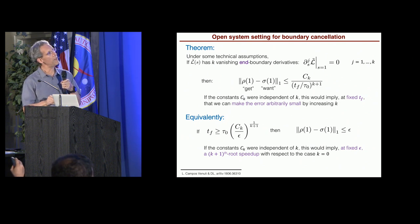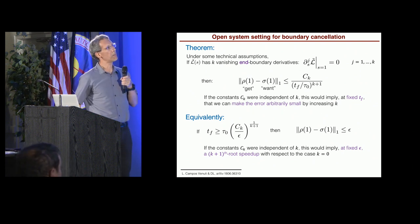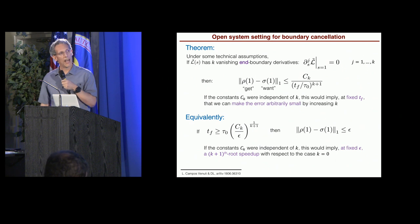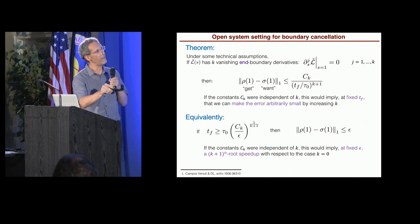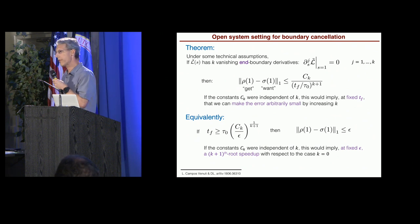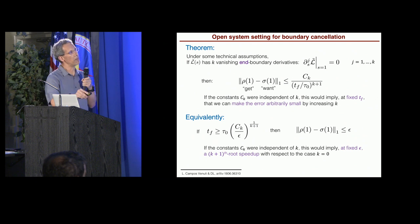Now, I just want to present another way completely equivalent of stating this theorem. The equivalent way is this. If you make the evolution time greater than this quantity here, where epsilon is the error, now we're going to fix the error. All right? So if the evolution time is greater than this, then the error is smaller than epsilon. So again, now, if the constants Ck were independent of K, this would imply that at fixed error, we would get a K plus 1th root speedup relative to not implementing any vanishing boundary conditions.